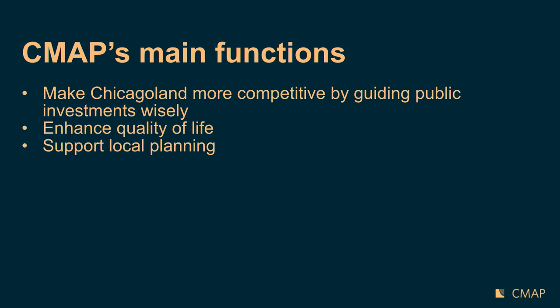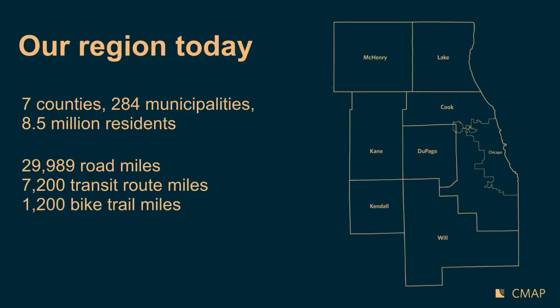Our main functions: we strive to make Chicagoland more competitive by guiding public investments wisely. We program most of the federal transportation dollars coming into the Chicago region. The needs of the transportation system are really great in our region, and we want every dollar invested going to the best possible project. We enhance quality of life by making travel more seamless, safer, and less congested. We also support local planning — working with municipalities, counties, and other inter-jurisdictional entities to produce planning products like bike and trail plans or comprehensive zoning plans.